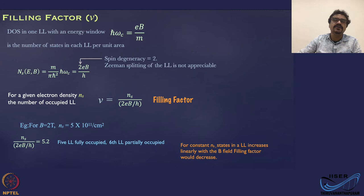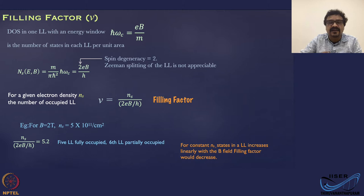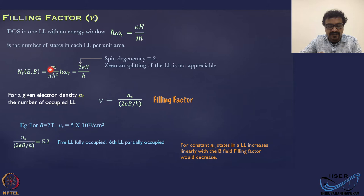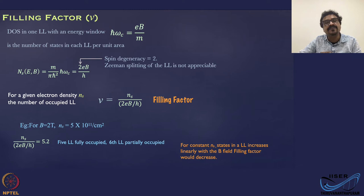There is another concept called the filling factor, which tells us how many Landau levels are actually filled for a given electron density. The density of states in one Landau level with energy window ℏω_c is given by the density of states per unit area multiplied by the energy window ℏω_c. Replacing ω_c with eB/m gives the number 2eB/h, where the factor of 2 accounts for spin degeneracy.